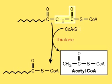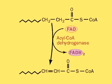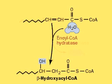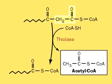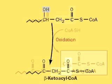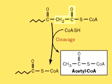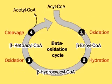Each time the cycle turns, going through its four steps of oxidation, hydration, oxidation, and cleavage, an additional two-carbon unit leaves the acyl-CoA as acetyl-CoA. Beta-oxidation continues until the fatty acid is fully broken down.